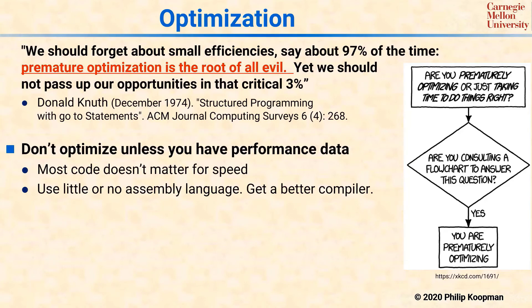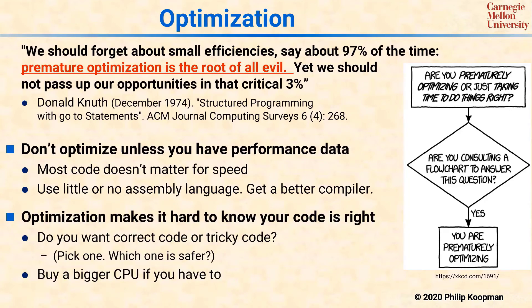There are two different types of problems with optimization. The first is that optimization makes it difficult to know if your code is correct. If the code is optimized and tangled and hard to understand, it's going to be difficult or impossible to find bugs. Seriously, do you want code that actually works, or do you want tricky, fast code that doesn't work? Pick one — the correct code is more likely to be safe. Ultimately, you might need to buy a more expensive CPU to make your code go fast enough. While it's common for embedded systems to be ruled by the tyranny of the bill of materials cost, think about your volume and what the cost really is. Another 50 cents for a CPU really doesn't matter if you're only building a thousand products — if you're building millions, that's a different story. But most embedded systems really don't have that kind of volume, so always go for the bigger, faster CPU instead of impossible-to-understand code, if the economics at all allow that.